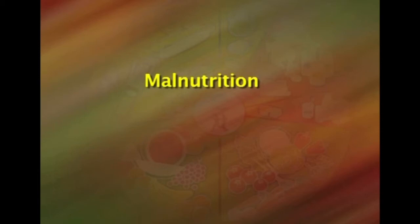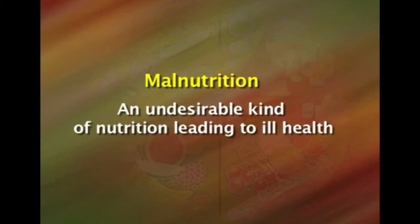Coming to the next term — malnutrition. Malnutrition means an undesirable kind of nutrition which leads to poor and ill health. It includes both undernutrition and overnutrition. Undernutrition is a state of insufficient supply of essential nutrients, whereas overnutrition refers to excessive intake of either one or more nutrients which creates a stress in the bodily function.